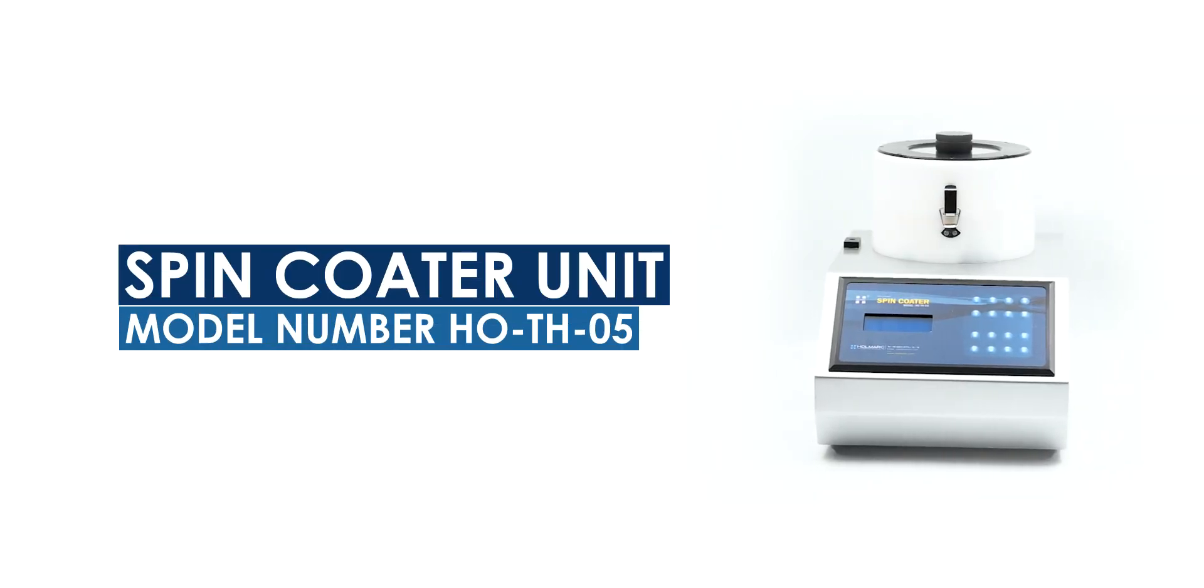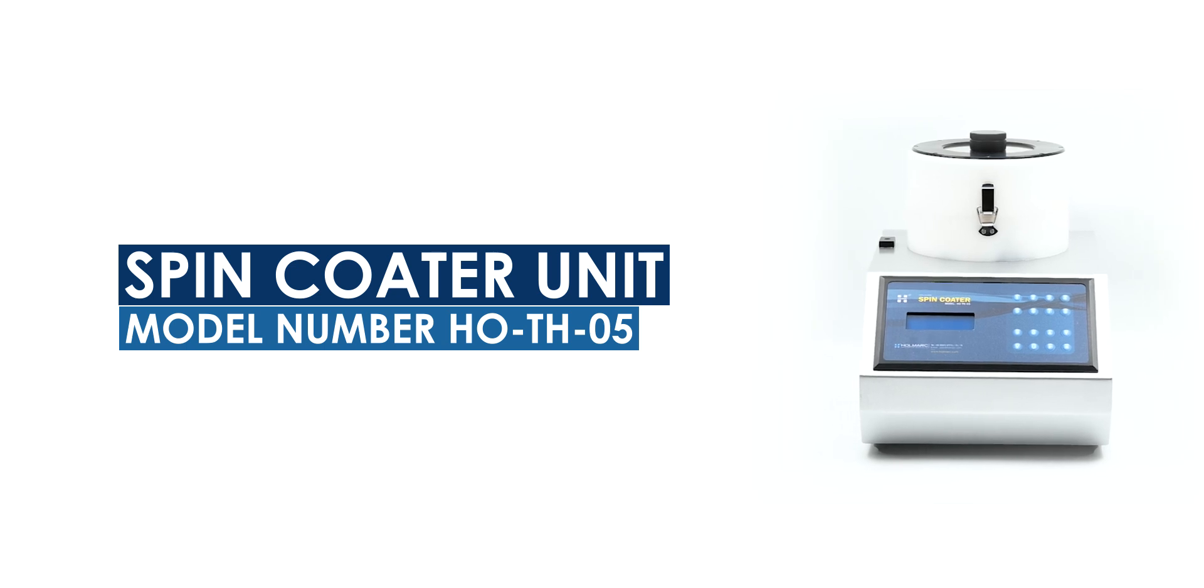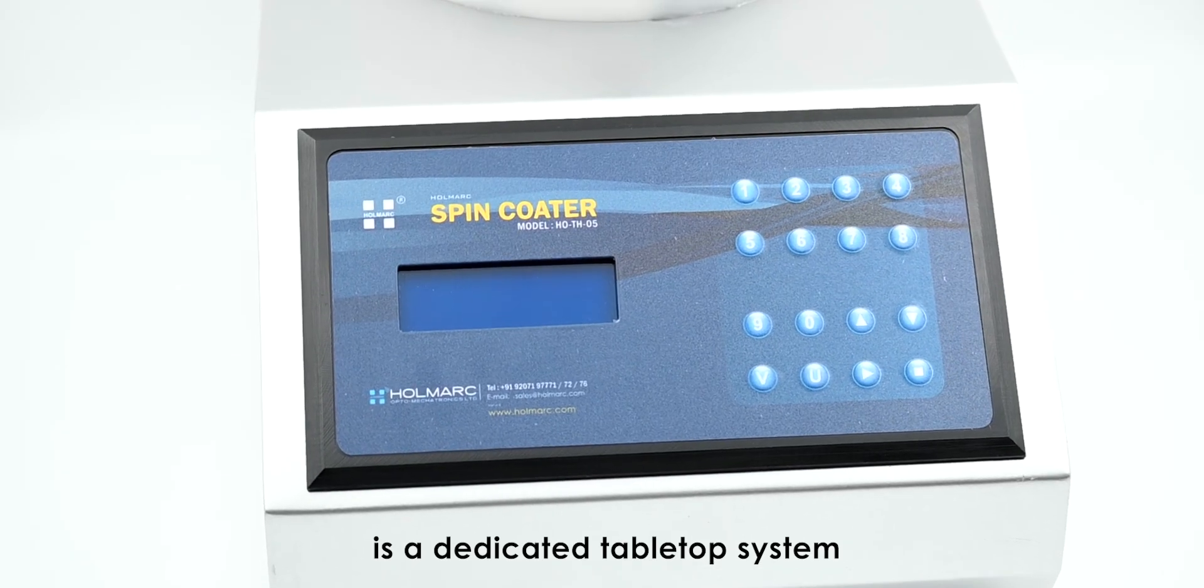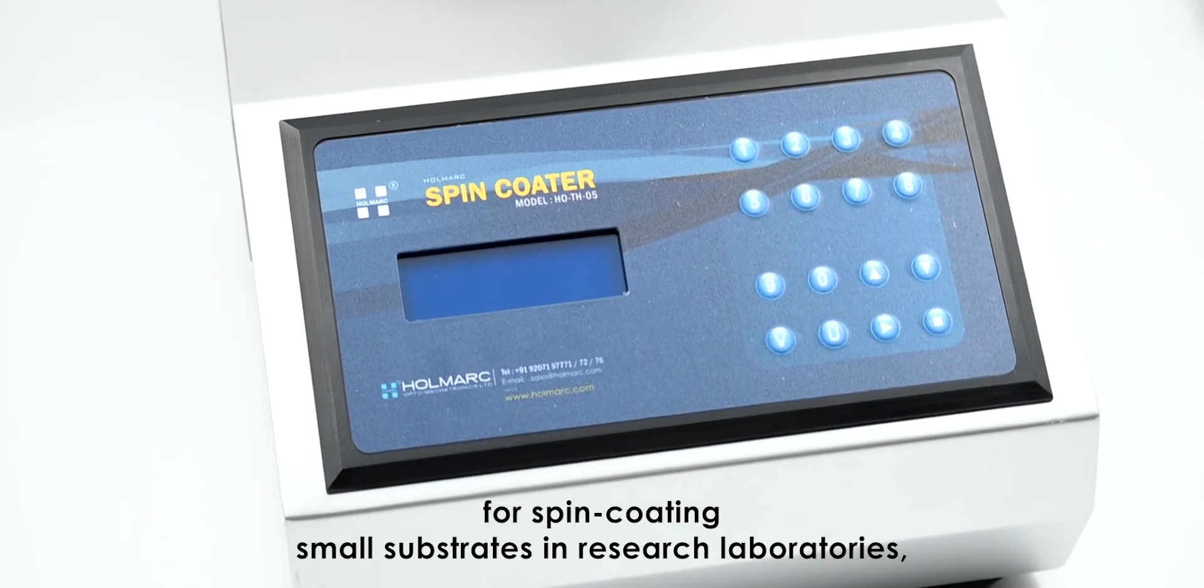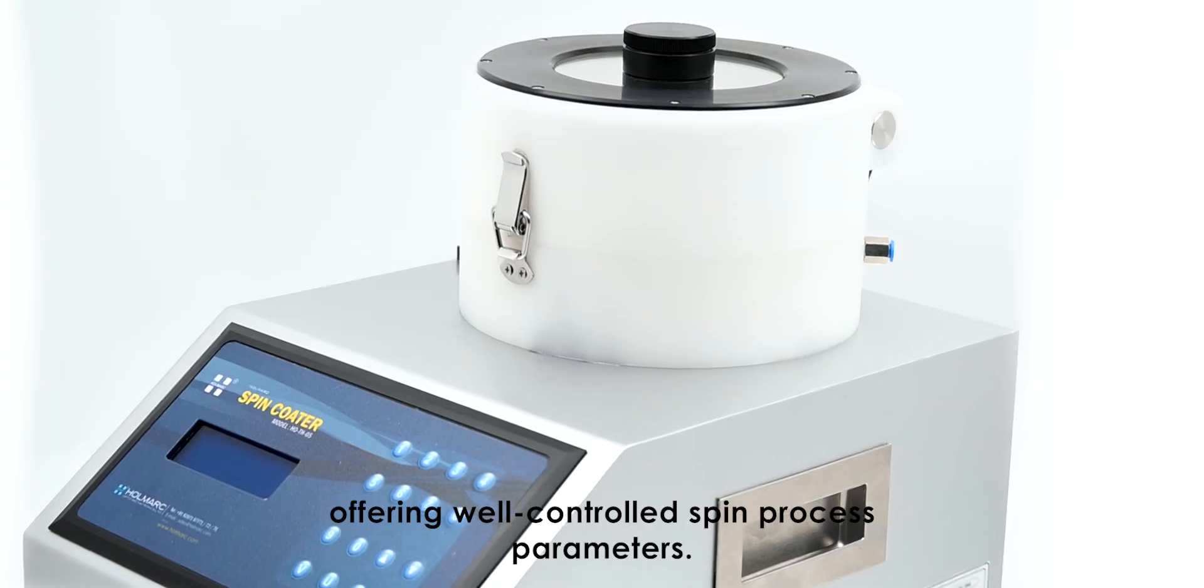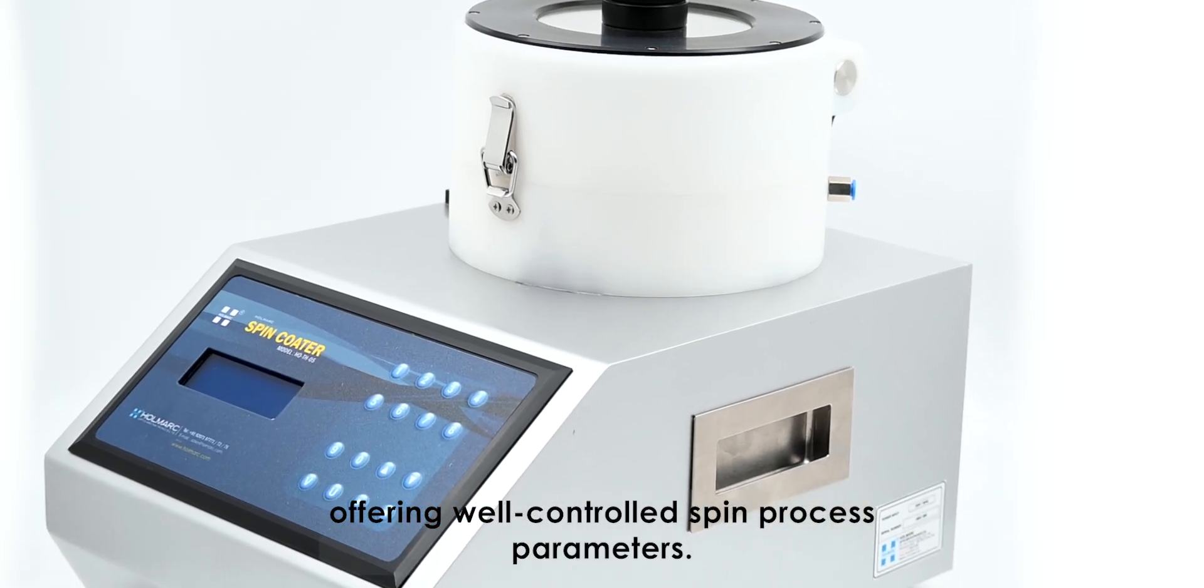Hallmark spin coater unit model number HOS TH05 is a dedicated table type system for spin coating small substrates in research laboratories, offering well-controlled spin process parameters.